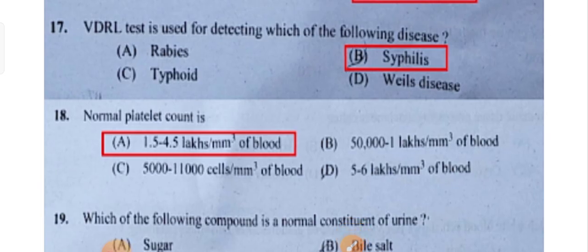VDRL test is used for detecting which of the following diseases — syphilis. Syphilis is nothing but a sexually transmitted disease. VDRL stands for Venereal Disease Research Laboratory. This is a very important question.